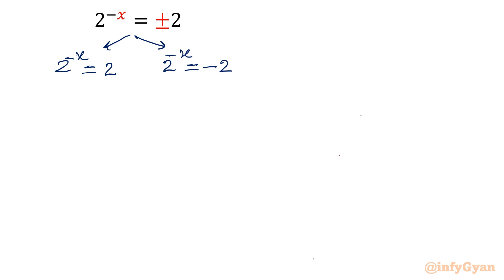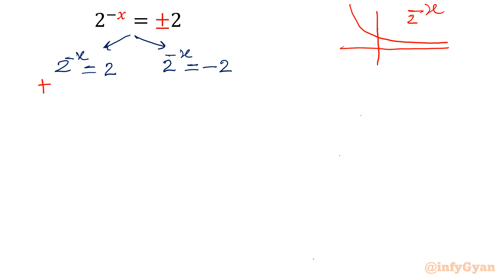If you observe the first one, the left hand side is 2 raised to the power minus x. This function is decreasing but always positive — always above the x-axis. So the left hand side is positive, the right hand side is plus 2, also positive. So we will get some real solution.